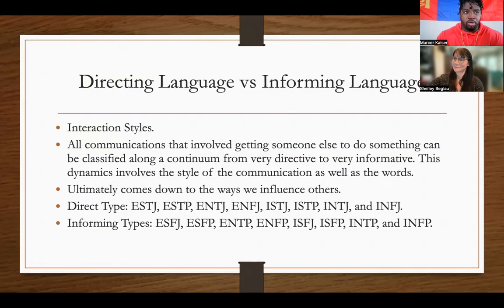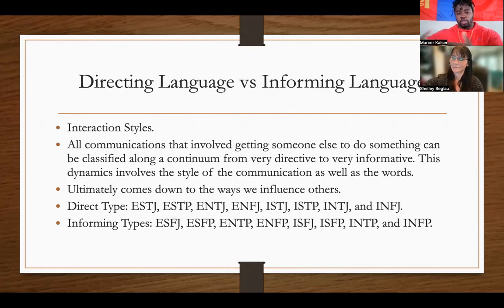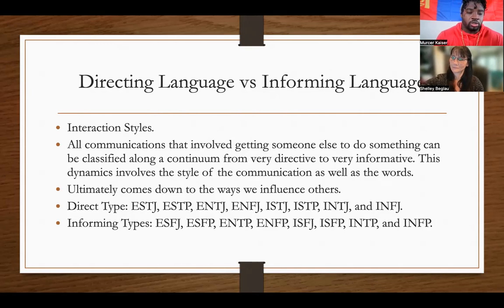Direct types are going to be specific, concise, and to the point. There's a spectrum to the words you use and how you go about it — it can be very direct or very informative. Generally speaking, informing types are going to try to get people to want to do what they're saying, whereas a direct type is going to just tell you what to do and be very upset if you don't do it.